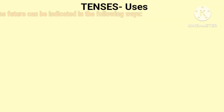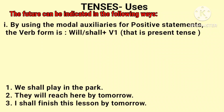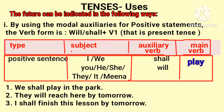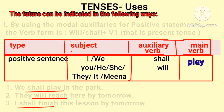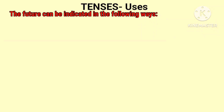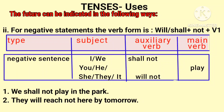The future can be indicated using modal auxiliaries. For a positive statement, the verb form is will or shall plus present tense. For example: We shall play in the park. They will reach here by tomorrow. I shall finish this lesson by tomorrow. For a negative statement, the verb form is will or shall plus not plus main verb. For example: We shall not play in the park.